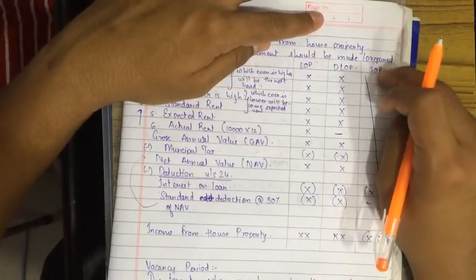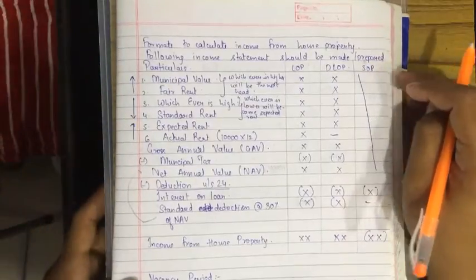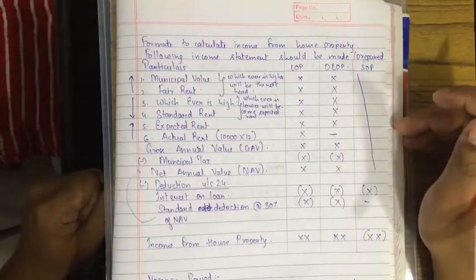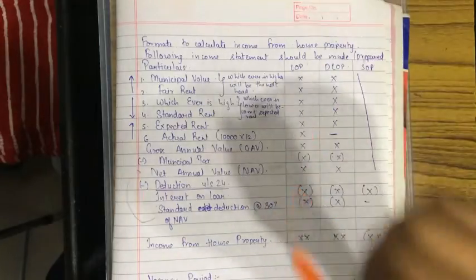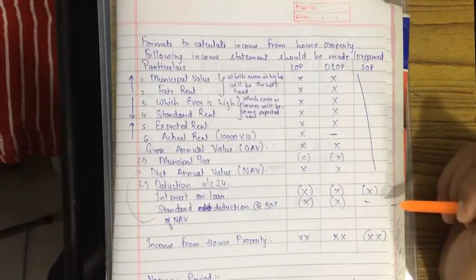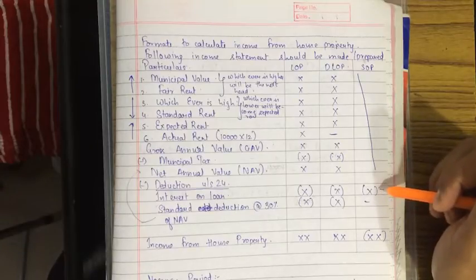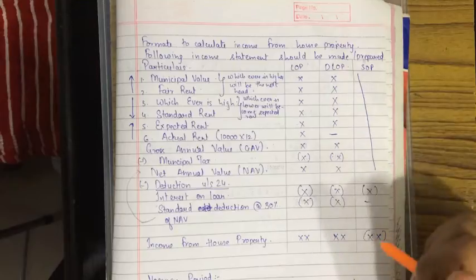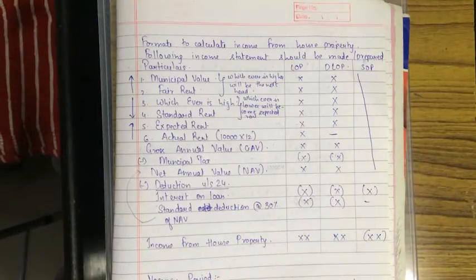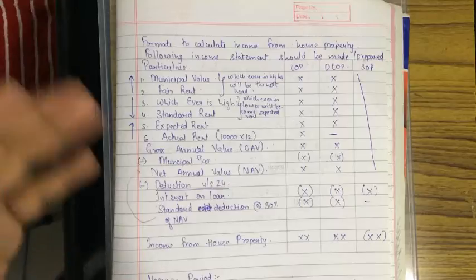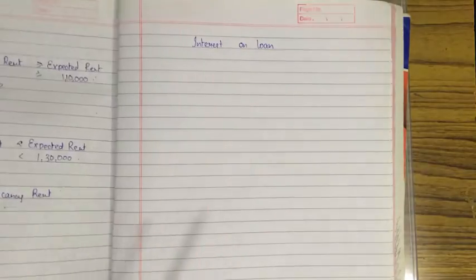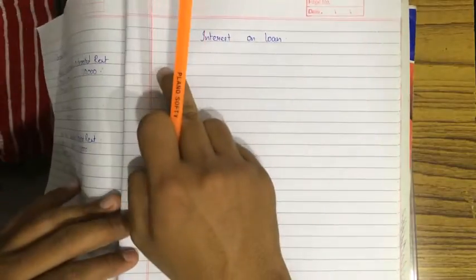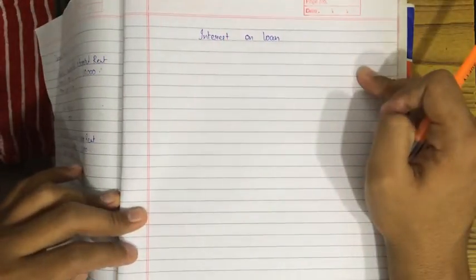Self-occupied property applies to many assessees who are not financially powerful, so they take financial assistance from a financial institution to buy the property. They are paying interest from their earnings, so to give them relief, interest on loan deduction is allowed. Such negative balance of income from house property will be set off and carried forward to other heads, bringing their income tax limit and tax calculation lower.